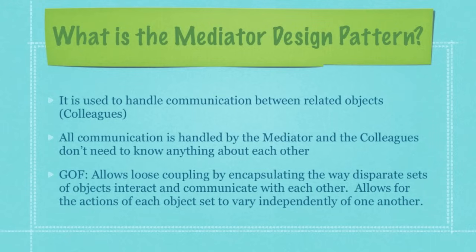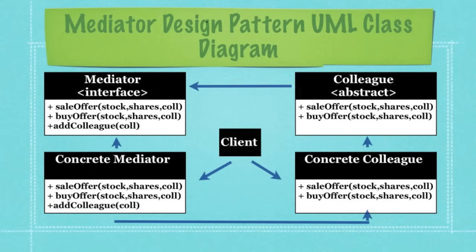So let's look at some pictures and make sense of all this because it's very simple. Basically what you have here is your mediator, which is an interface, and then you're going to have a concrete mediator. The mediator interface and the abstract class, which is going to represent all colleagues that are created, all share common methods. And how they're going to communicate to the mediator is through the use of these common methods. The client is going to deal with both a concrete mediator as well as concrete colleagues.